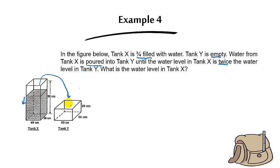Water is poured from tank X to tank Y, so the water level in X drops while the water level in Y increases, up to the point where the water level in X is twice the water level in Y. The question asks for the water level in tank X after this transfer.